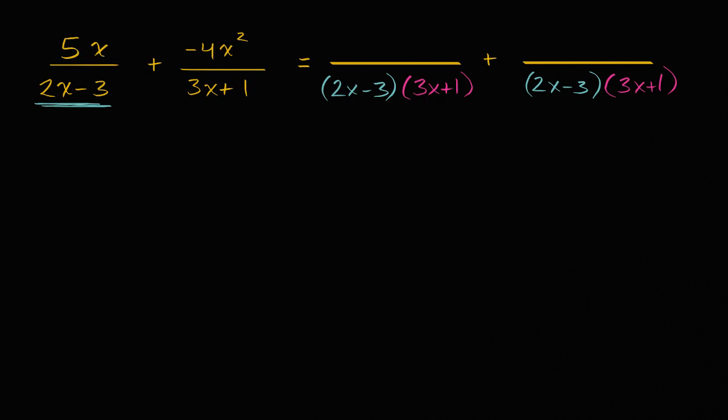So the original numerator was 5x, and now we're gonna multiply it by the 3x plus one. So times 3x plus one. Notice I didn't change the value of this expression. I multiplied it by 3x plus one over 3x plus one, which is one, as long as 3x plus one does not equal zero.